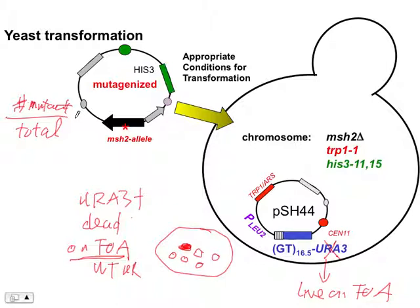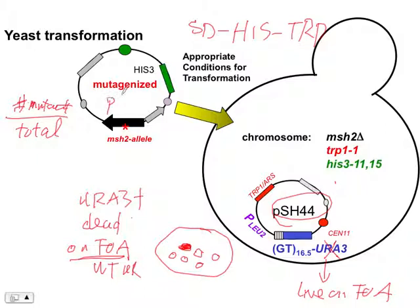Today we are not using FOA — we are just trying to put the plasmid into the cell. We're using media called SD minus histidine and minus tryptophan, because we want to select for both pSH44 and pMSH2 plasmids simultaneously. We also plate without uracil because we want to select for wild-type URA3 as well.